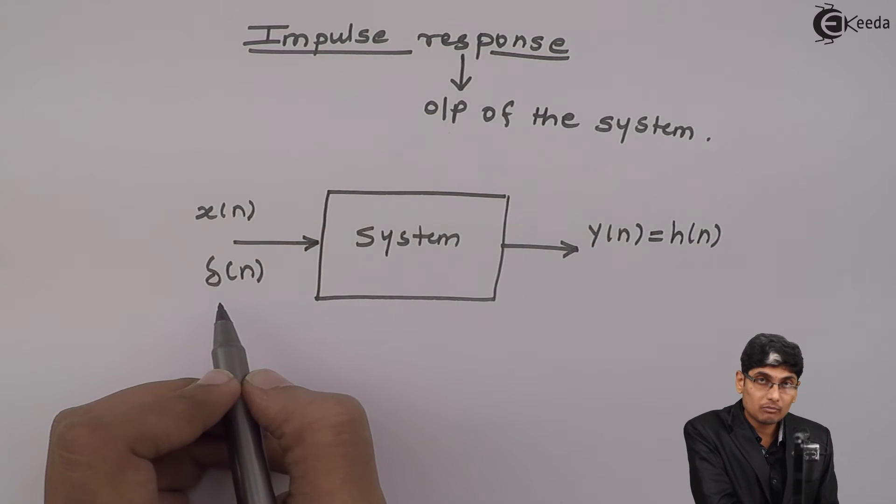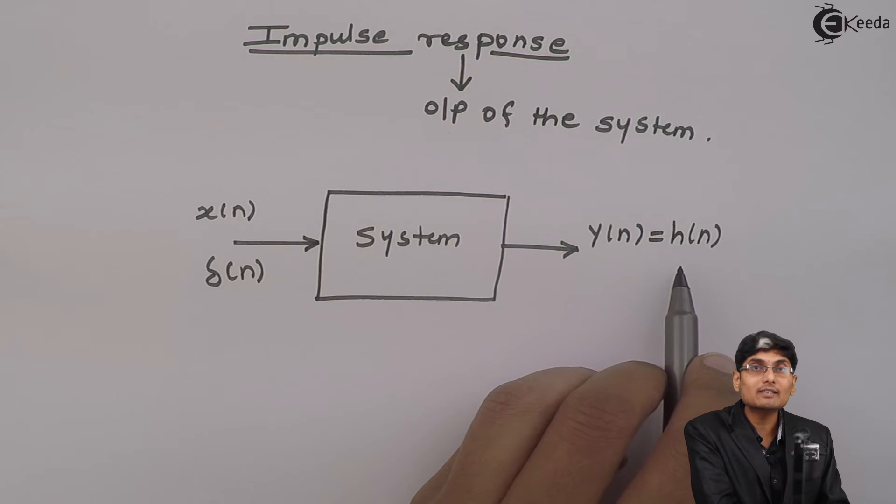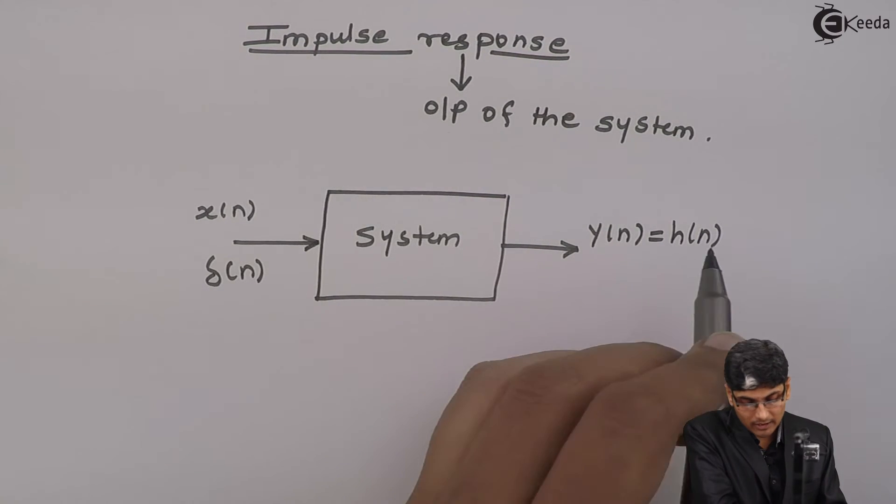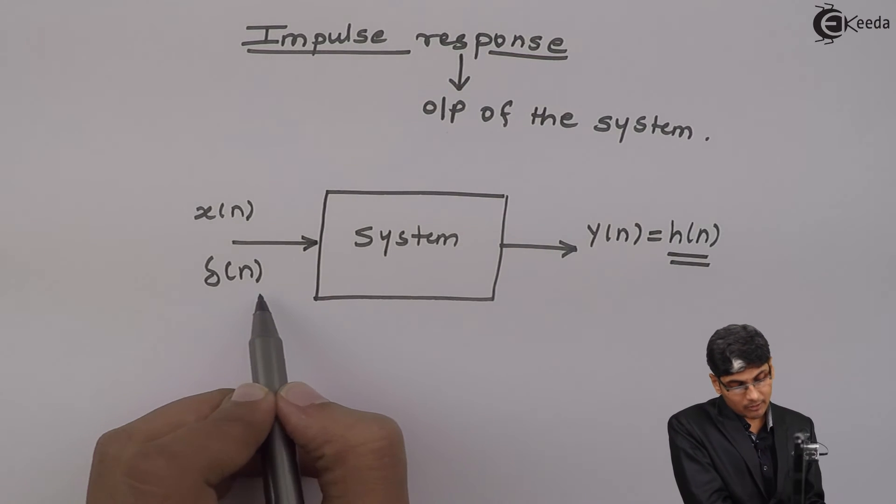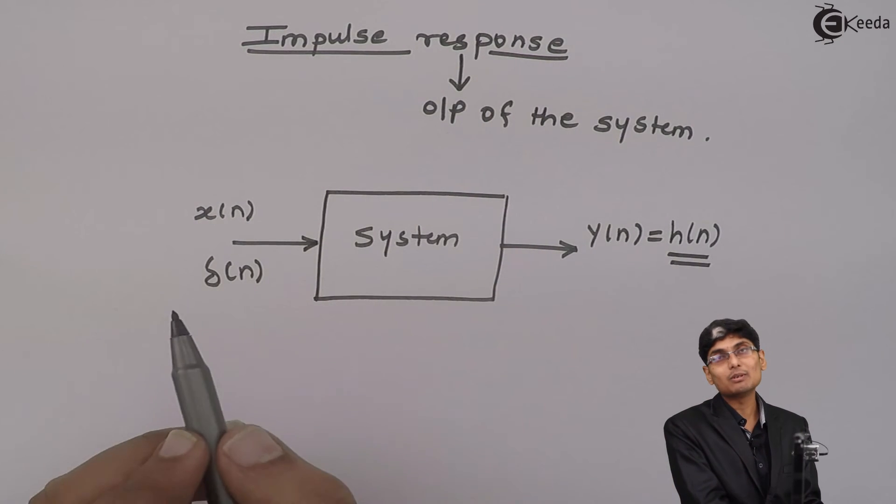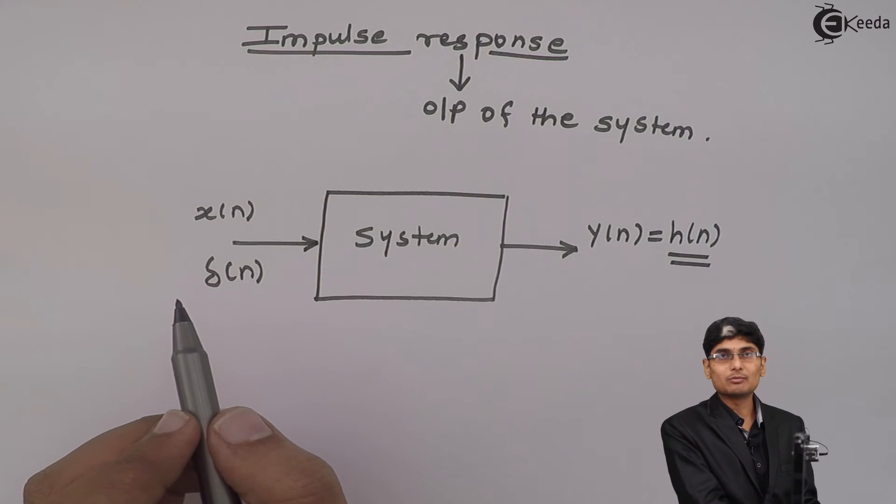If the input is impulse then the output is called as impulse response denoted as h of n. So, whenever I give an input as impulse my output will be called as an impulse response.